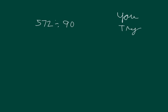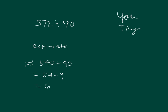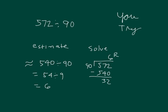It's your turn to try 572 divided by 90. Run an estimate first. Did you do 540 divided by 90 to get 54 divided by 9, which is 6? Here's our solution: 572 divided by 90. We get 6, because 6 times 9 is 54 — so 6 times 90 is 540 — and 572 minus 540 is 32.